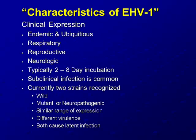EHV-1 is endemic in the United States and literally worldwide — it is ubiquitous, it is everywhere. It has three forms we commonly see: the respiratory form, which is probably the most common; the reproductive form; and, more recently, a lot of emphasis on the neurologic form. It typically has a two- to eight-day incubation period, but that is variable. Subclinical infection is very common. Currently there are two strains we recognize — one we call the wild strain, one we call the mutant or neuropathogenic strain.